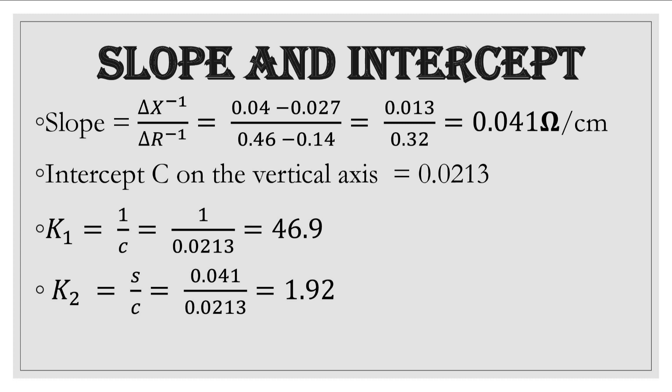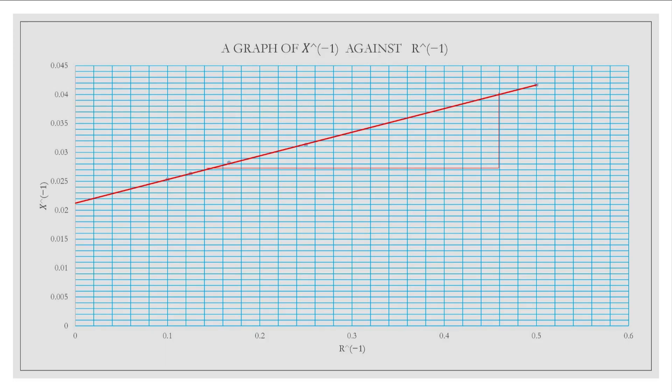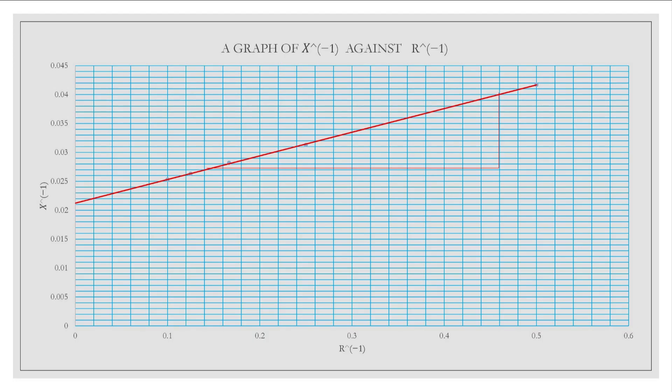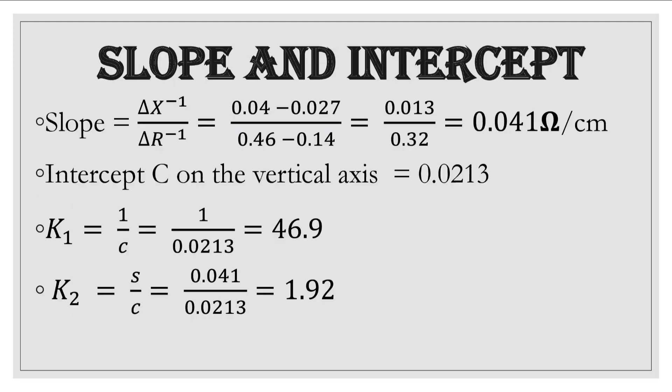If we read off the intercept on the vertical axis as you can see from the graph, our value is going to give us 0.0213. Now in the question we are asked to deduce k1. K1 here is just the inverse of the intercept, so by substitution we'll get k1 to be 46.9. If we calculate k2 which is the slope over the intercept, by substitution our k2 would give us 1.92.